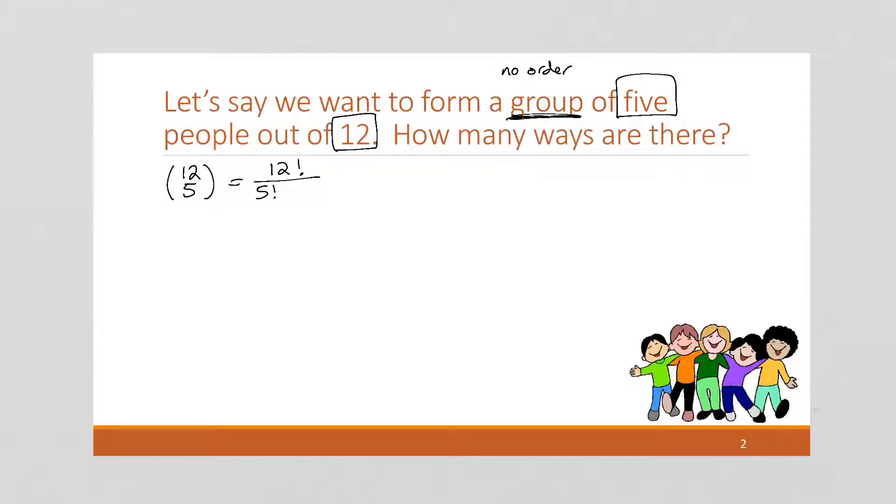12 factorial over 5 factorial times 12 minus 5 factorial, which is 12 factorial, 5 factorial times 7 factorial. Now, if we work this out, stopping at 7 factorial, I'm going to have 5 times 4 times 3 times 2 times 1 times 7 factorial. I can cancel out the 7 factorials. I can say 3 times 4 cancels with the 12, 5 times 2 cancels with the 10. And I'm left with 11 times 9 times 8, which if you work that out, it's going to be 792.